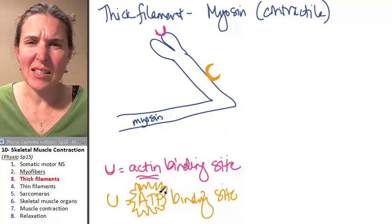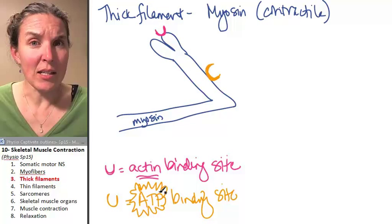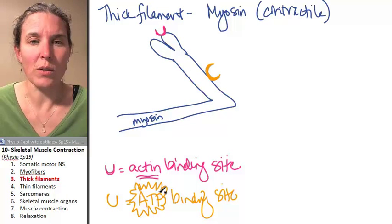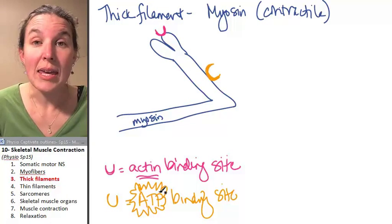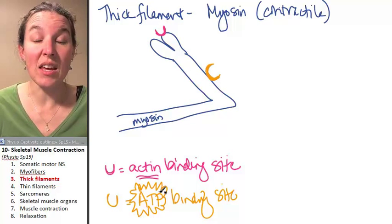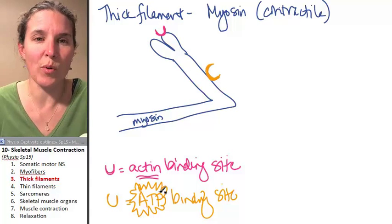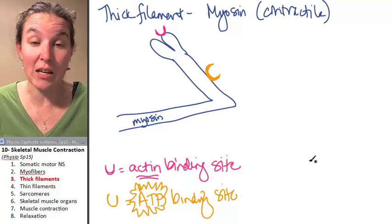And does it make sense to you that we're going to need some ATP to contract a muscle? Totally. Okay. Guess what? Myosin, the thick filament. I'm going to show you how we put myosin molecules together to make a thick filament.